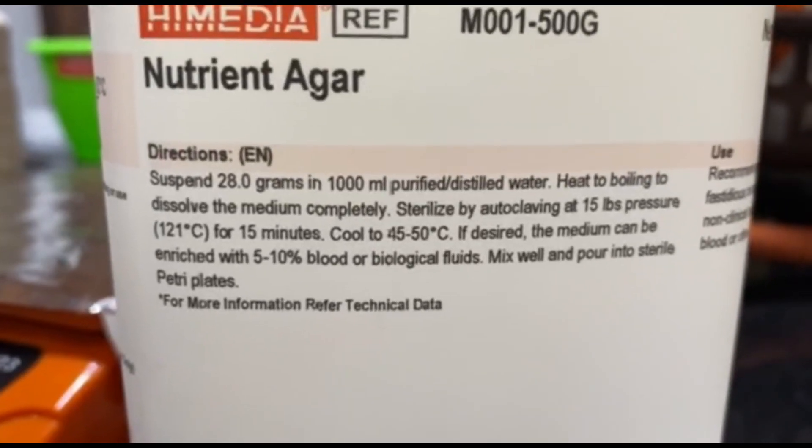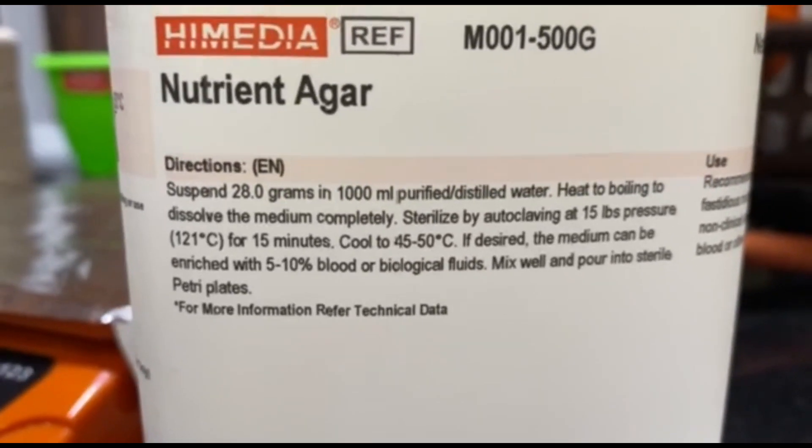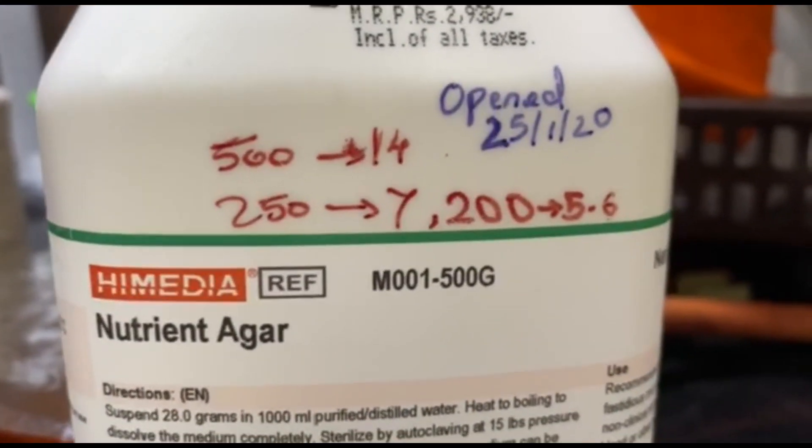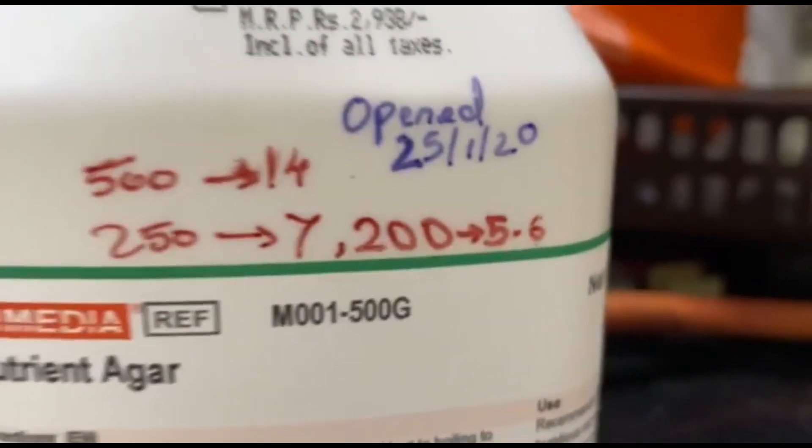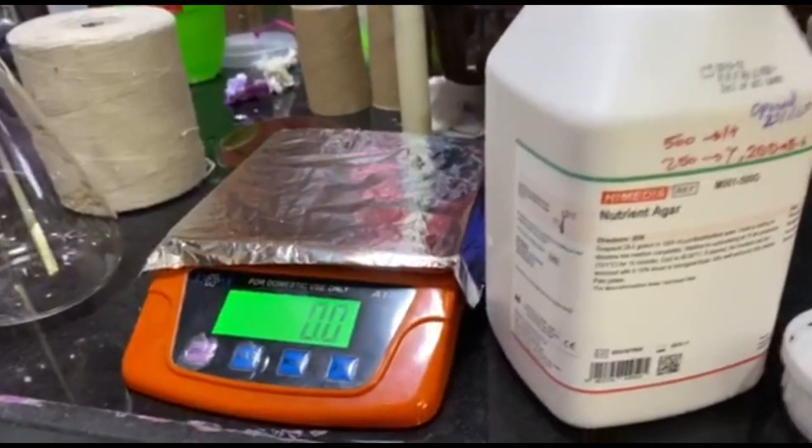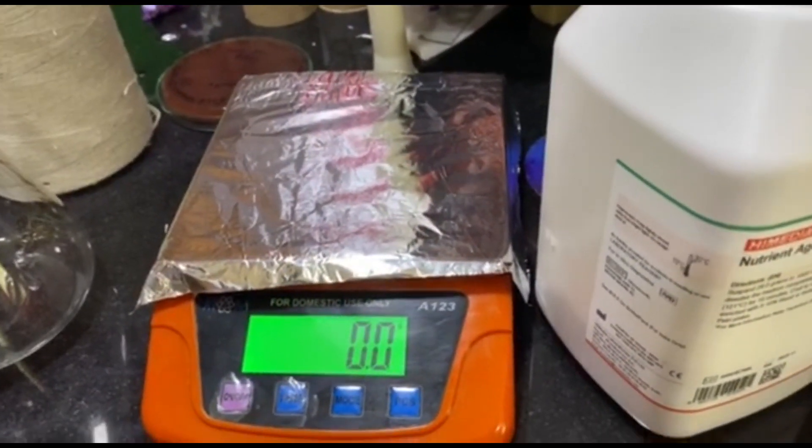We are using human blood, 5%. Let me tell you first how to do the calculations. If you can see here, for 1000 ml distilled water, 28 grams is needed. Today we will make only 200 ml of agar, so these are the calculations. After you are done with your calculations, this is a measuring machine, so aluminum foil has been already kept on it.